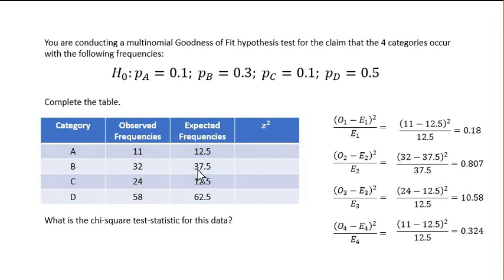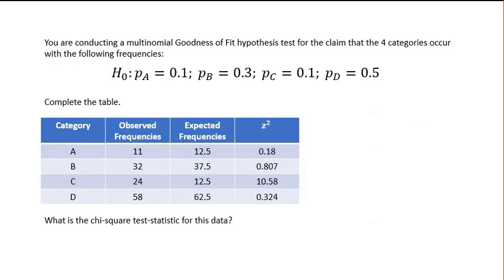I did that for each of the individual rows. So 32 minus 37.5 squared divided by 37.5. And I did it for the last two. And I got these numbers here. That's what this Z squared is. That's what's going to go in this column. So those are the individual differences squared and then normalized by dividing by the expected frequency. So those values go into that last column in the table.